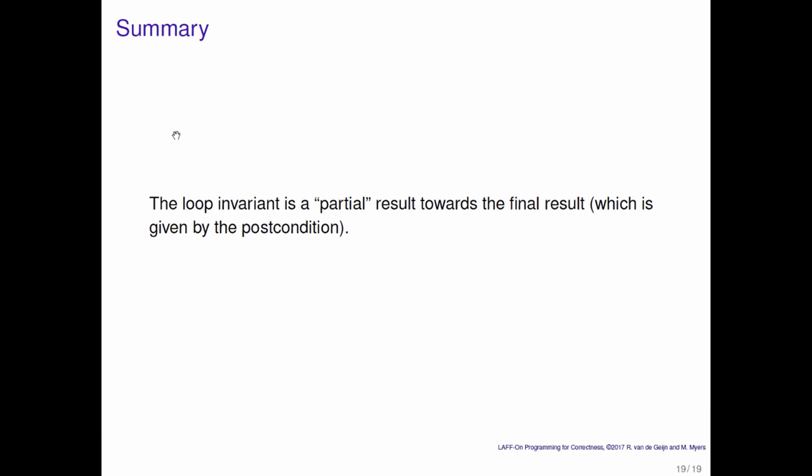So in summary, the loop invariant represents a partial result towards the final result, which is given by the postcondition. And therefore there should be a systematic way of deriving loop invariants from the postcondition, keeping in mind what the precondition is.